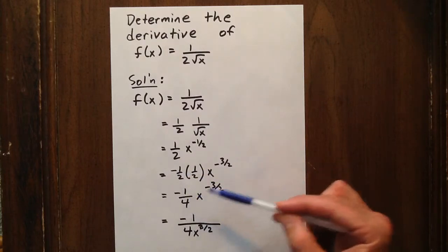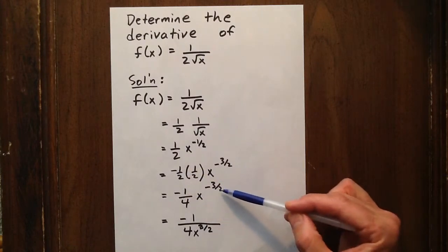Negative 1 half times 1 half is negative 1 quarter, and we still have x to the negative 3 halves.